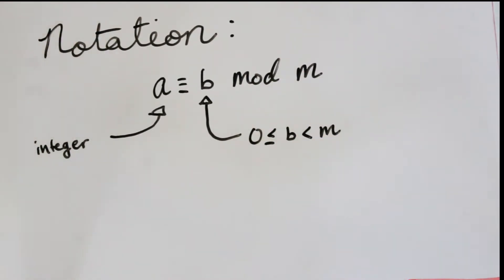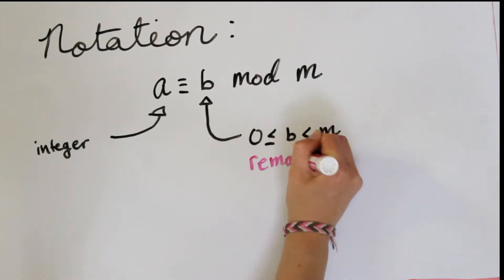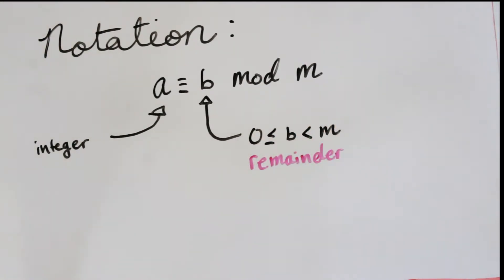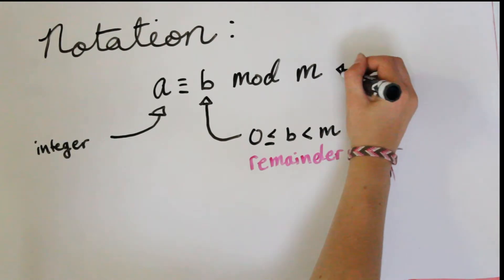Here we have a is congruent to b mod m, and a is any integer, negative or positive, it doesn't matter. b is our remainder when we divide by m, so it's greater than or equal to zero and strictly less than m.